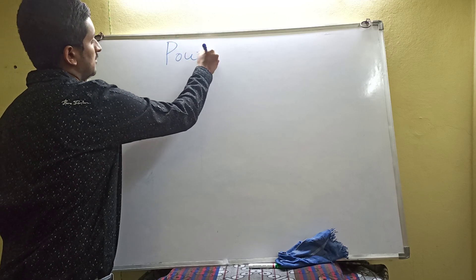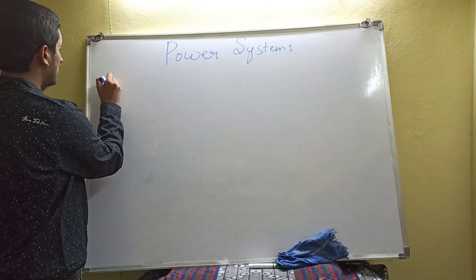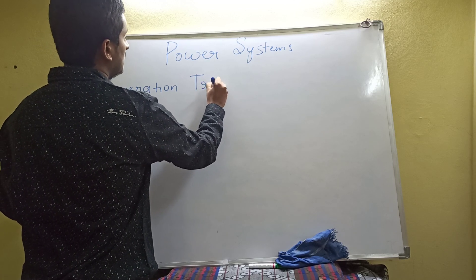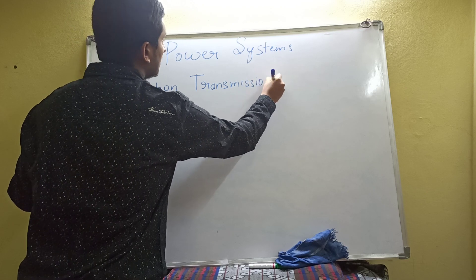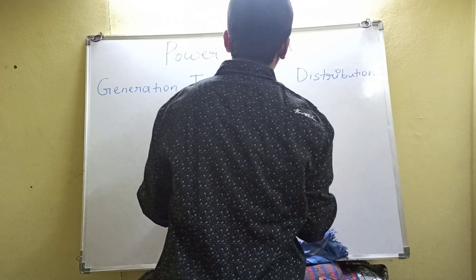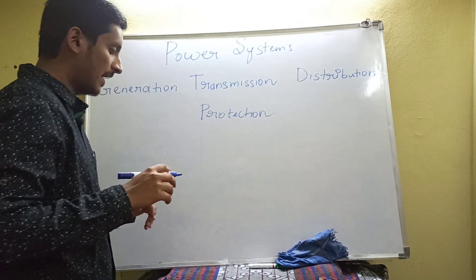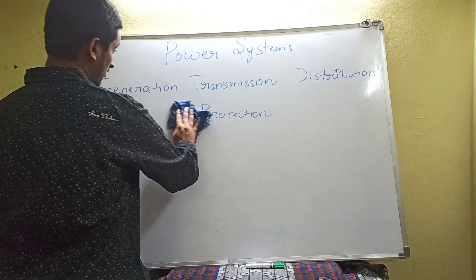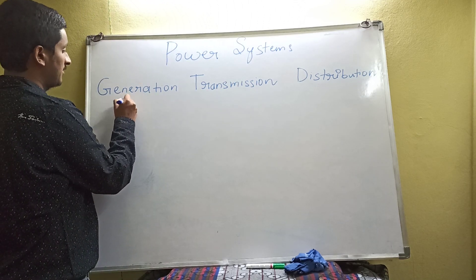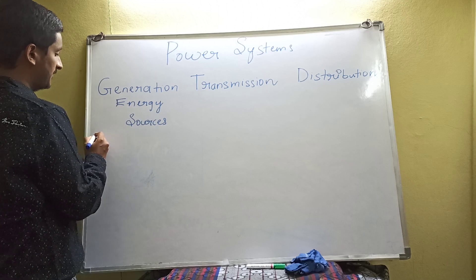Let us start with power systems. Power systems consists of generation, transmission, and distribution. We even have protection, but since protection is not in our syllabus, we are not going to discuss it.